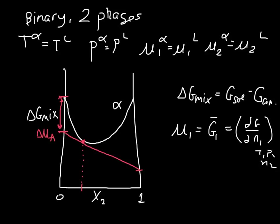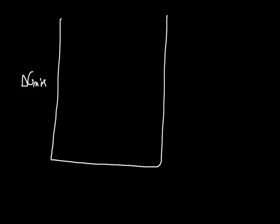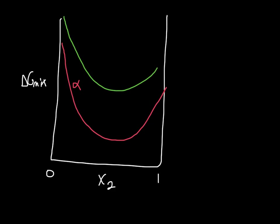The intercept on the left axis gives delta mu 1 and on the right axis gives delta mu 2 from zero — so it is the intercept of the tangent line that gives us the chemical potential. Now if a phase is present that we are interested in, we can look at delta G mix versus x2. We can have one curve for the alpha phase and one curve for the liquid phase.